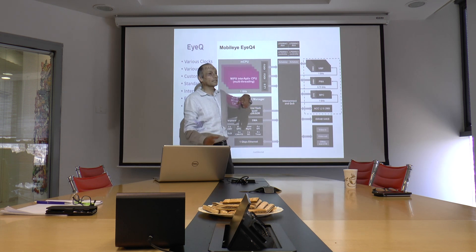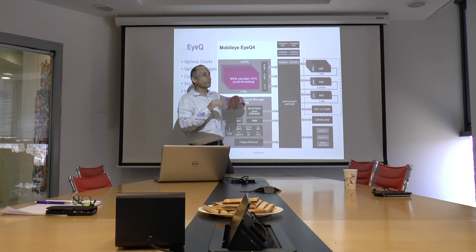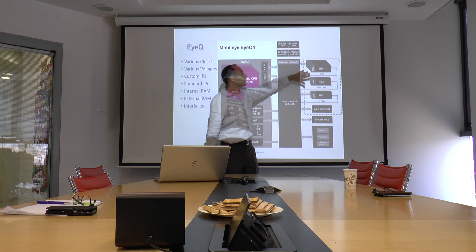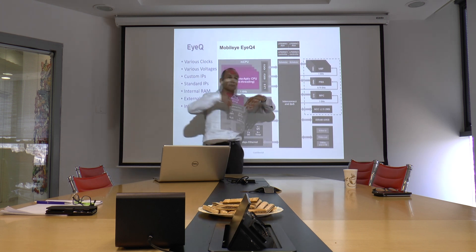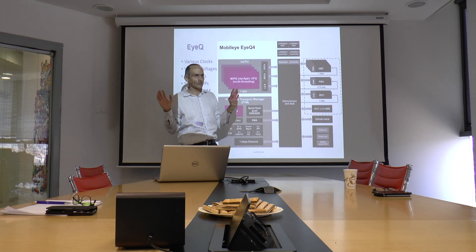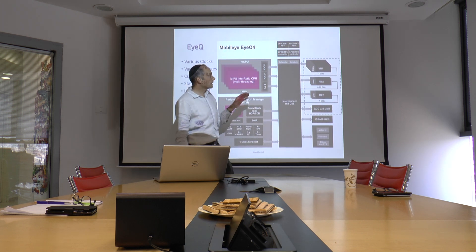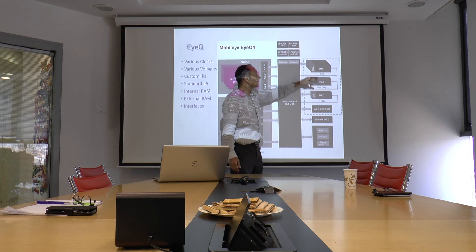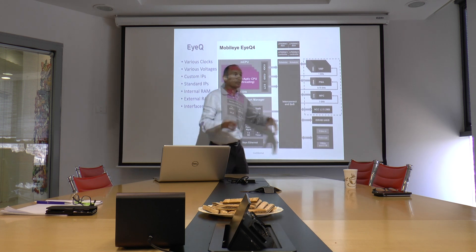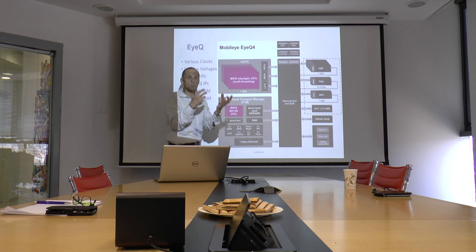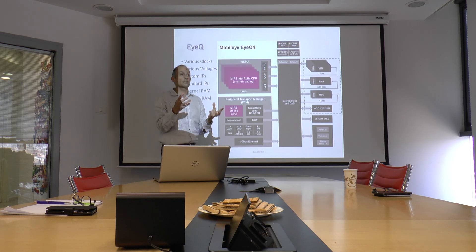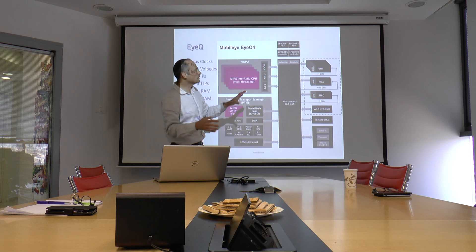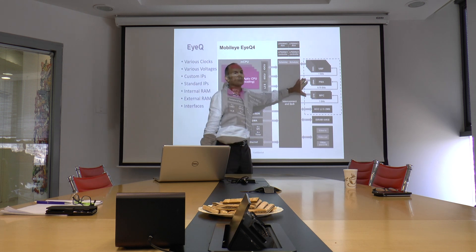IQ3 put more of these things working in parallel and got rid of the fixed hardware. IQ4 put even more of these and added others that do all kinds of specific calculations that we need. This is what makes Mobileye unique.